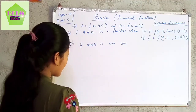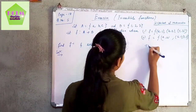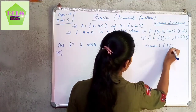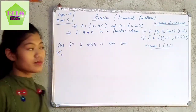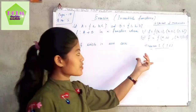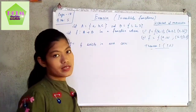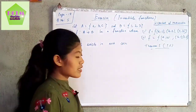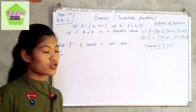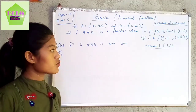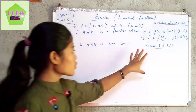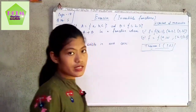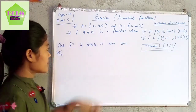We have Theorem 1 on invertible functions: if the composite of two functions f and g are identity maps, then we can say these functions are bijective — both one-one and onto. We will apply this theorem here.